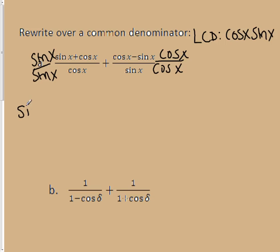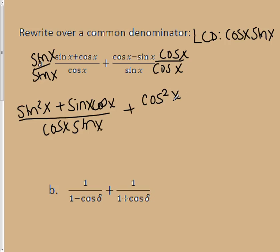Now I'm going to distribute this through. On the left-hand side, I'm going to get the sine squared of x plus the sine of x cosine of x, and that's over the cosine of x, sine x. Plus, I'm going to distribute this right-hand side through, so I'm going to get the cosine squared of x minus the sine of x, cosine x, all over the sine of x, cosine of x.